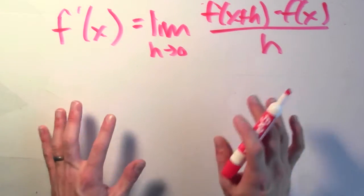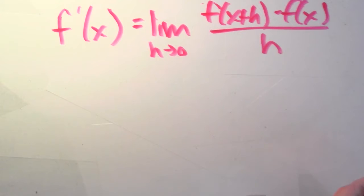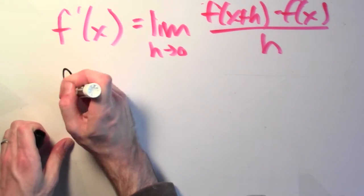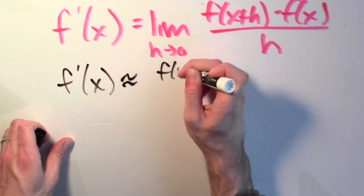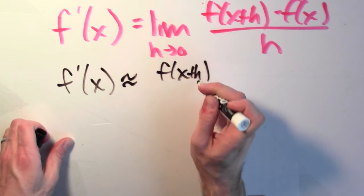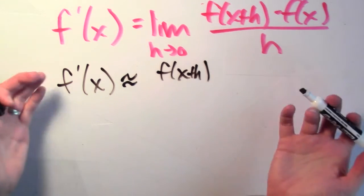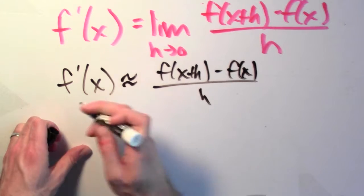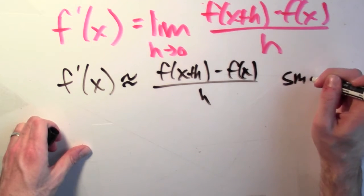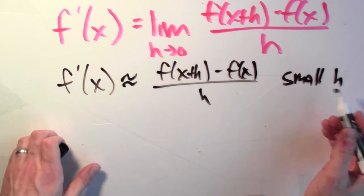Now, how does that help us here? Well, if I just pick some value of h, an actual value of h that's not 0 but close to 0, then I get that f'(x) should be approximately f(x+h) for that small but non-zero value of h, minus f(x) over h. This is approximately equal as long as h is small.